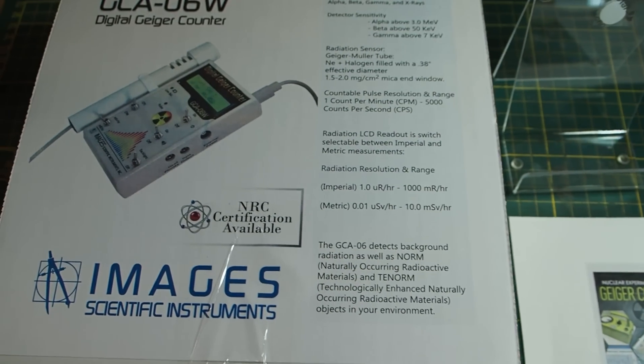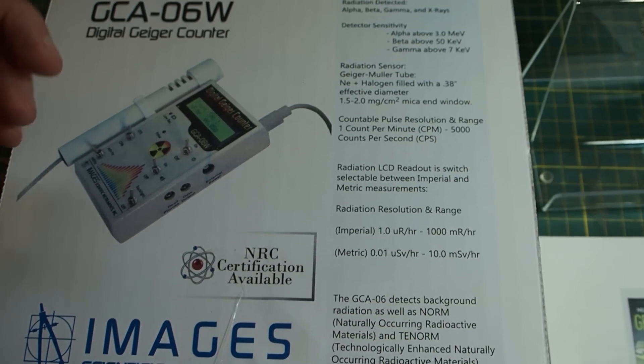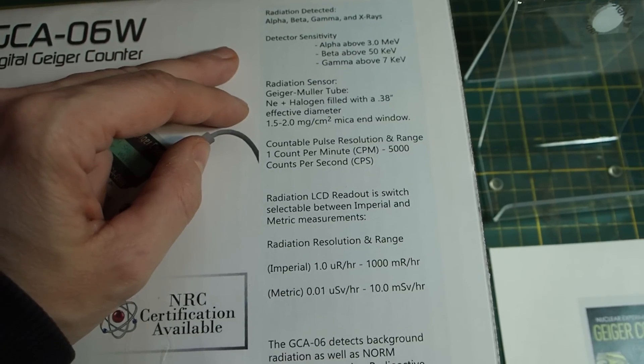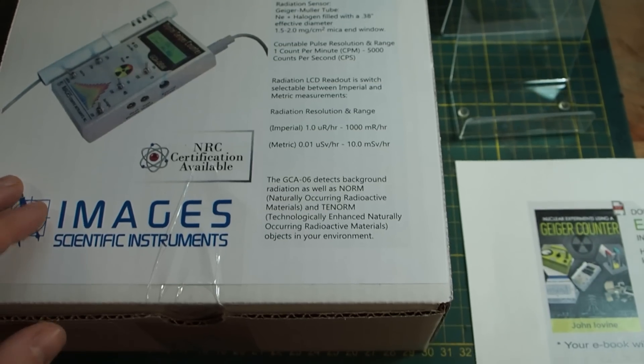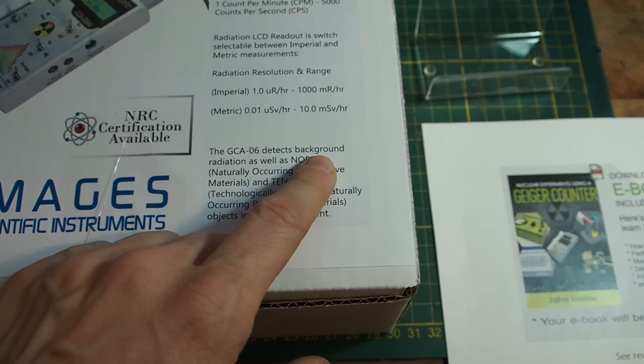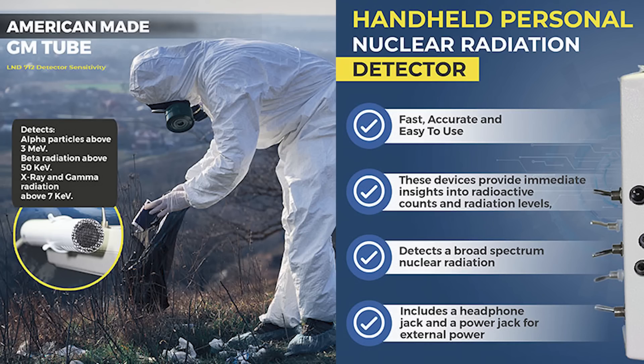Alright so this is the box that the Geiger counter comes in and basically on front here you can see all of the information what the Geiger counter can do. Then also here it's saying that this device can detect background radiation as well as natural occurring radioactive materials as well as technologically enhanced naturally occurring radioactive materials.